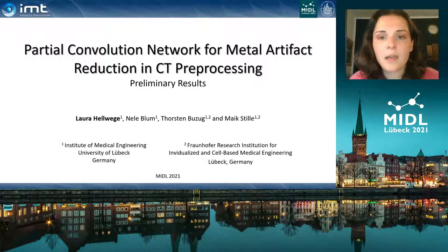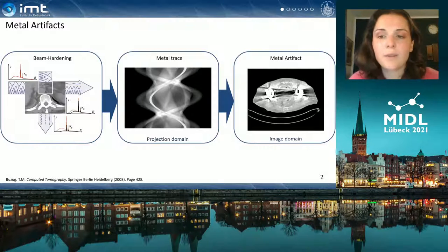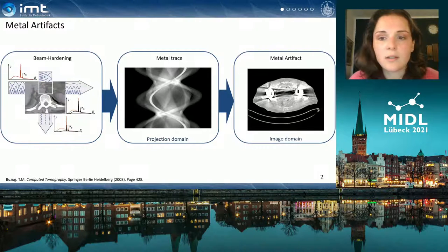Today I am talking about a network that reduces metal artifacts. These artifacts arise from multiple sources of disturbances in the CT projection data, the most prominent one being beam hardening.